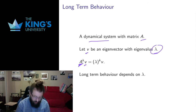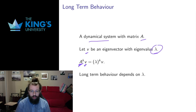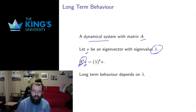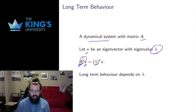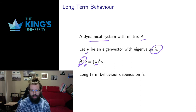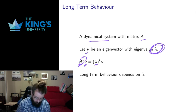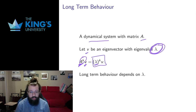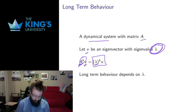If I happen to start in a state which is an eigenvector, acting with matrix A is just multiplying by the eigenvalue lambda. If I act K times — starting in state V and looking K time steps later — I end up just multiplying by lambda each time. So if I start with an eigenvector, the long-term behavior depends entirely on the eigenvalue, because I'm just taking higher powers of it.